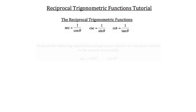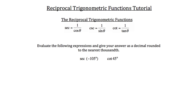Let's begin with simple calculator work: evaluate the following expressions rounded to the nearest thousandth. Starting with the secant of negative 105 degrees — remember, secant is 1 over cosine theta. A helpful memory trick: the beginning letters of secant and cosine switch, so secant is 1 over cosine. So secant of negative 105 degrees equals 1 over the cosine of negative 105 degrees, which gives us negative 3.86.